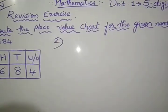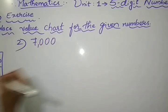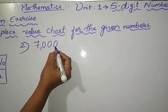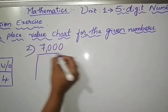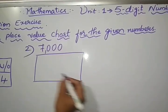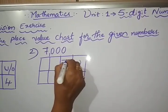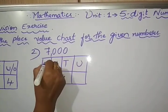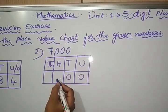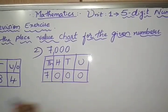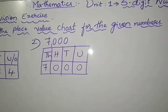We go for second, that is 7,000. Draw the chart there, unit, tens, hundreds, thousands, write down 0, 0, 0, 7. That's 7,000. Remaining 2, you do yourself.